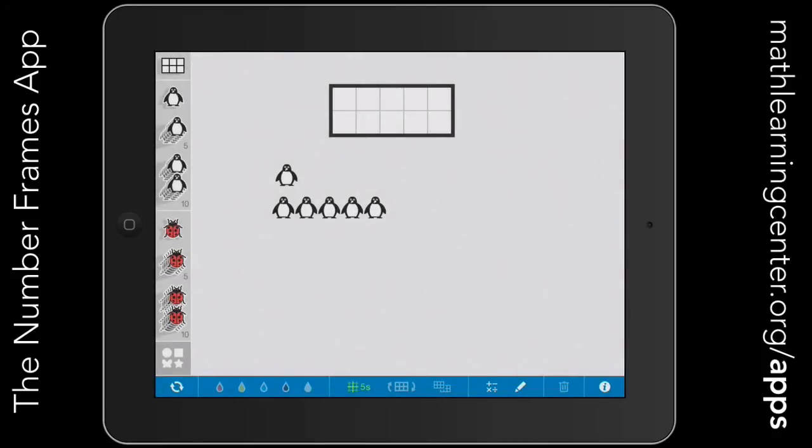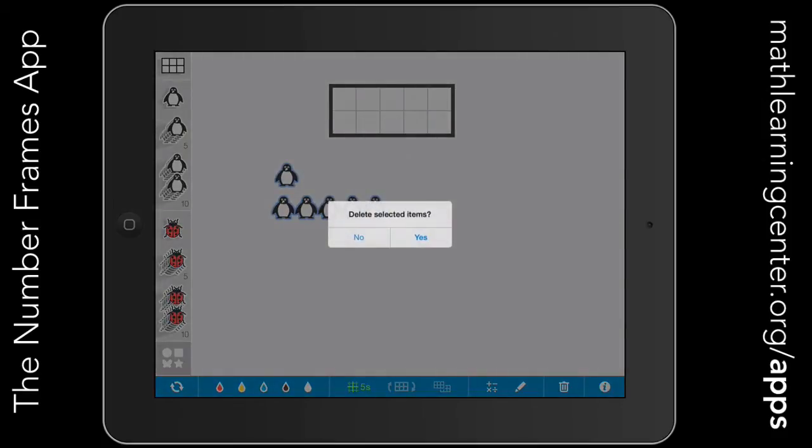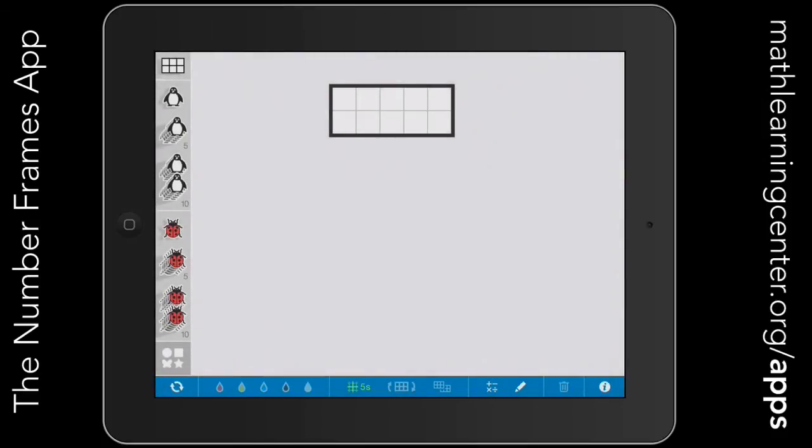To select a counter you can tap them individually or you can draw a circle around all of them at once, and then they'll all be selected. Let's go ahead and fill up our ten frame. This time we'll use the ladybugs. I'm going to select four of those and move them out over here so that I can show you another great feature.